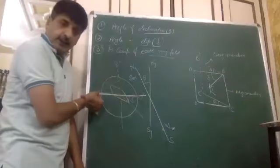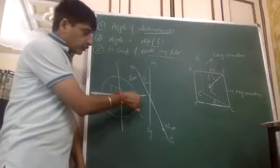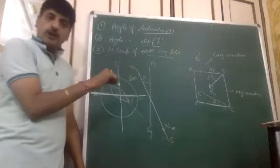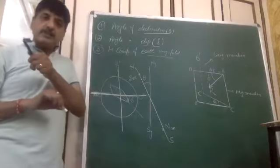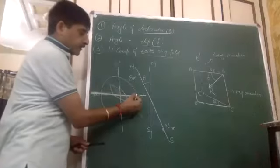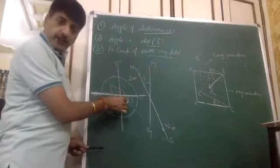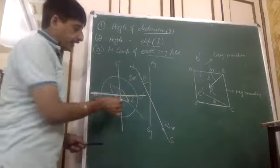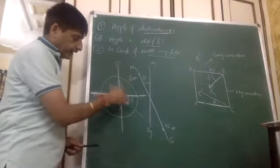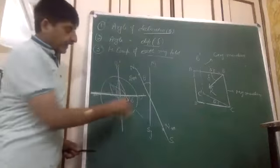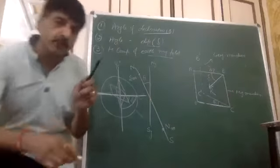This magnetic equator will be at the magnetic pole. If we take this location, it will be the magnetic equator. If we take this magnetic equator, the value will be 0. If we take this vertical plane, it will be aligned. If we take this angle of dip, it will be 90.